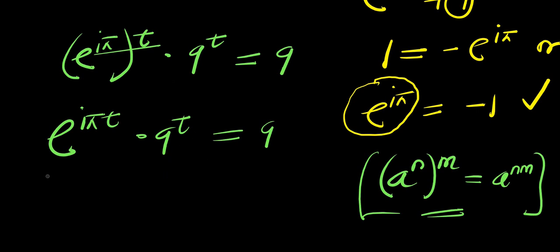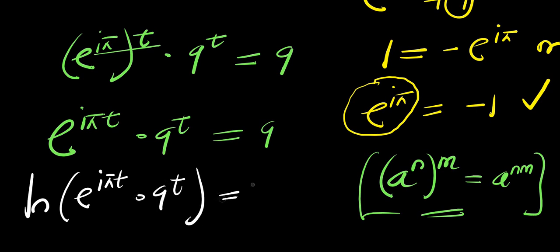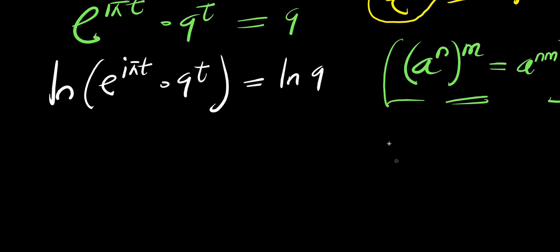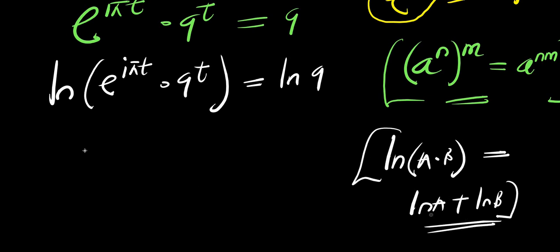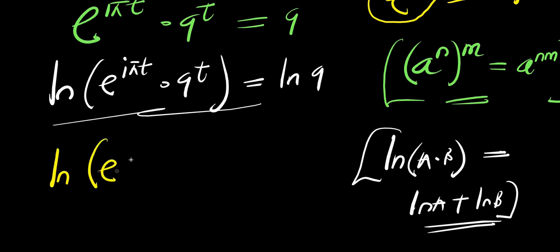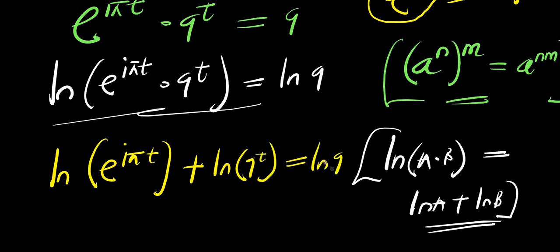Applying this identity, we have e to the power of i times pi times t, times 9 to the power of t, equals 9. So what we can do next is apply the natural log to both sides. Taking the natural log of e to the power of i times pi times t, times 9 to the power of t, equals the natural log of 9. Using the property that ln(a times b) equals ln(a) plus ln(b), we split the left side.